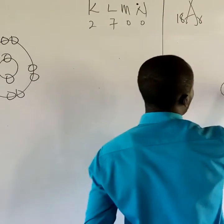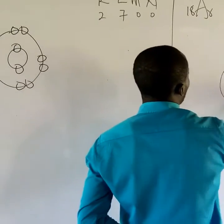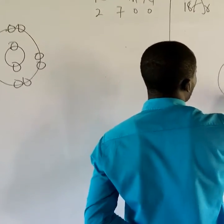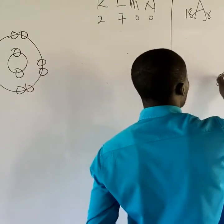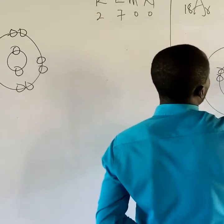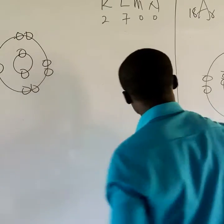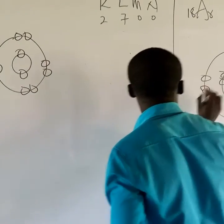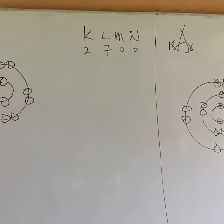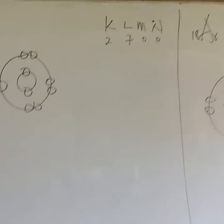We have the first shell, K, with 2 on it. The next shell has 8 on it. The next shell, another 8 on it. Very simple. So this is the electronic configuration of argon, fluorine, aluminium, and calcium.